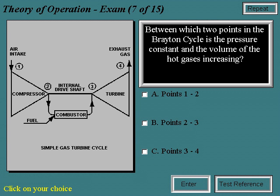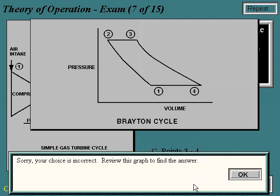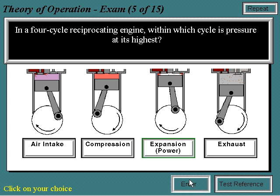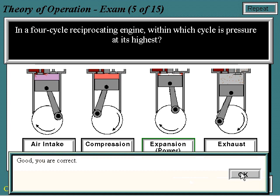Between which two points in the Brayton cycle is the pressure constant and the volume of the hot gas is increasing? Sorry, your choice is incorrect. In a four-cycle reciprocating engine, within which cycle is pressure at its highest? Good, you are correct.